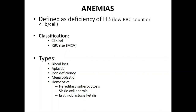Anemia is defined as deficiency of the hemoglobin or low RBC count and hemoglobin less than normal. For diagnosing anemia, we must know the normal level of hemoglobin or RBCs. The normal level of RBCs in males is 5.2 million per cubic millimeter, and in females is 4.7 million per cubic millimeter. The level of hemoglobin in males is 14 to 16 grams per deciliter, and in females it is 12 to 14 grams per deciliter.